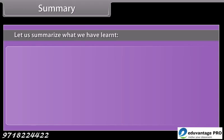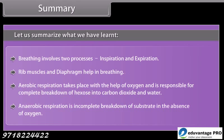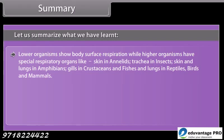In summary: breathing involves two processes — inspiration and expiration; rib muscles and diaphragm help in breathing. Aerobic respiration takes place with the help of oxygen and is responsible for the complete breakdown of hexose into carbon dioxide and water. Anaerobic respiration is the incomplete breakdown of substrate in the absence of oxygen. Lower organisms show body surface respiration, while higher organisms have special respiratory organs: skin in annelids, trachea in insects, skin and lungs in amphibians, gills in crustaceans and fishes, and lungs in reptiles, birds, and mammals.